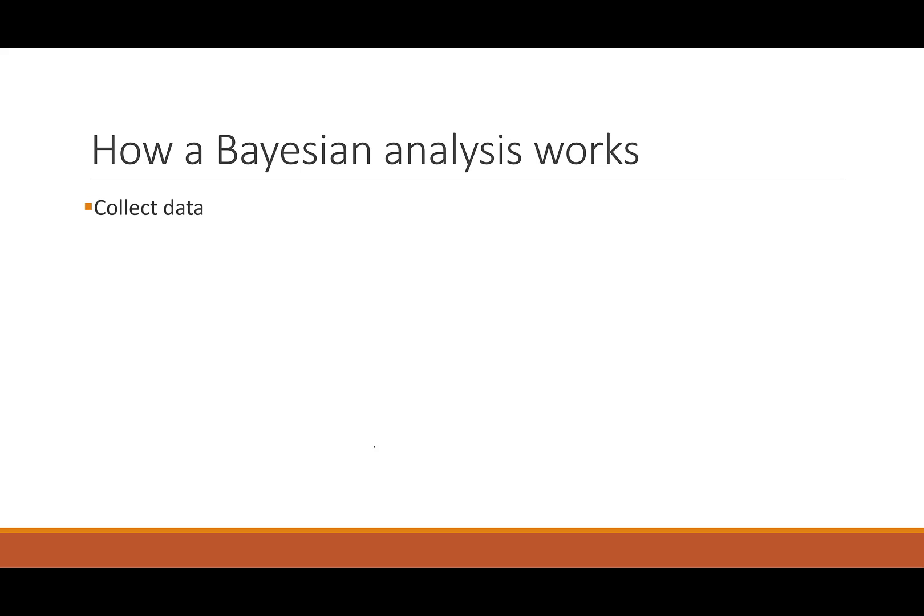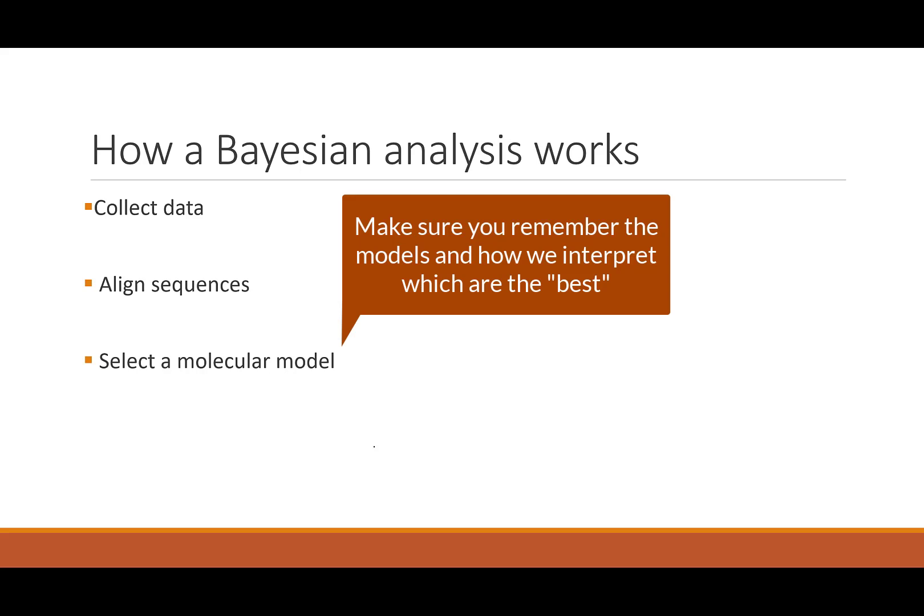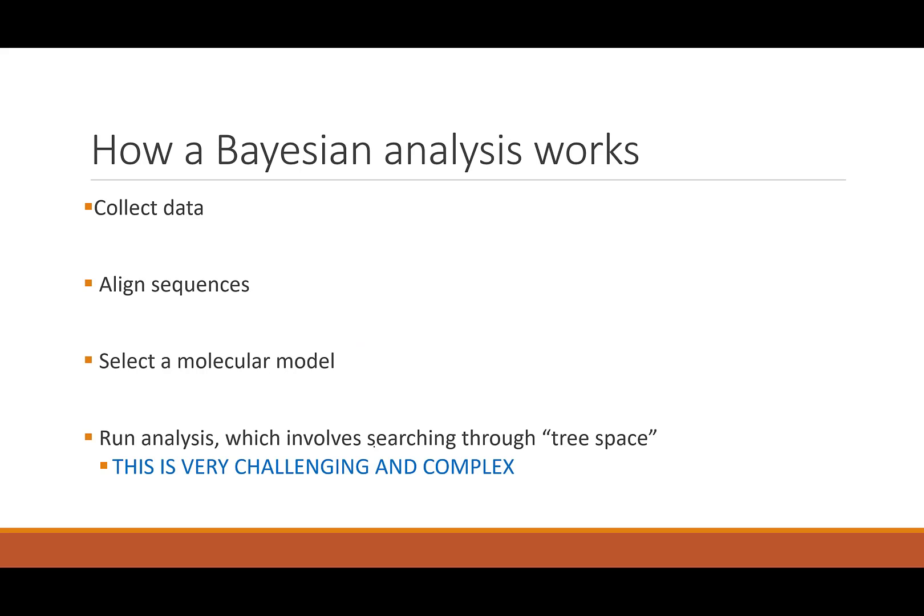This happens by gathering specimens, collecting specimens, isolating their DNA, using PCR to amplify the genes of interest. You align your sequences, whatever those might be. So those could be DNA, RNA, protein. And nowadays we actually use Bayesian analysis with morphological data, which is kind of interesting. After you align your sequences, you use a program called Model Test to select a molecular model of your choosing. Make sure that you are able to illustrate or explain these different models. And then finally, you run an analysis, which involves searching through tree space. And I've made a note here that this is very challenging and complex. I'm going to simplify it so that you understand how it works, generally speaking.